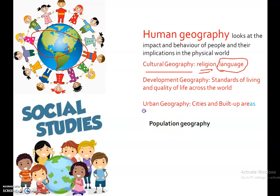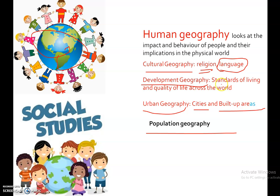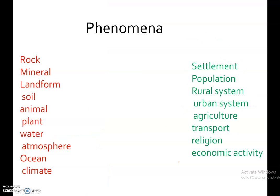Social geography studies the earth in relation to the social activities of people. Urban geography studies cities and built-up areas, along with population geography and development geography. Development geography studies the standard of living and quality of life across the world. These were the key differences between Human Geography and Physical Geography.